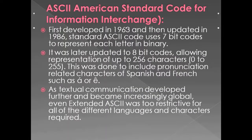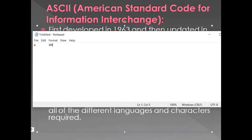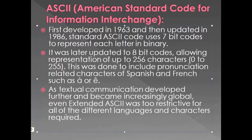ASCII stands for the American Standard Code for Information Interchange. It was first developed in 1963 and then updated in 1986. The standard code uses seven bits for each character in binary — for example, the letter A would be represented by seven bits. It was later updated to eight-bit codes, allowing representation of up to 256 characters from 0 to 255. This was done to include pronunciation-related characters of Spanish and French. However, even extended ASCII was too restrictive for global communication.